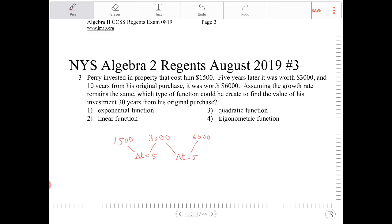Inherently, this is going to behave as an exponential function. So therefore, that has to be option one.